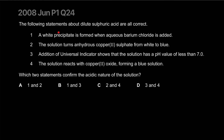The following statements about dilute sulfuric acid are all correct. Which two statements confirm the acidic nature of the solution? A white precipitate is formed when aqueous barium chloride is added — that's true, but it doesn't talk about it being an acid, so I'm going to mark it as not relevant.